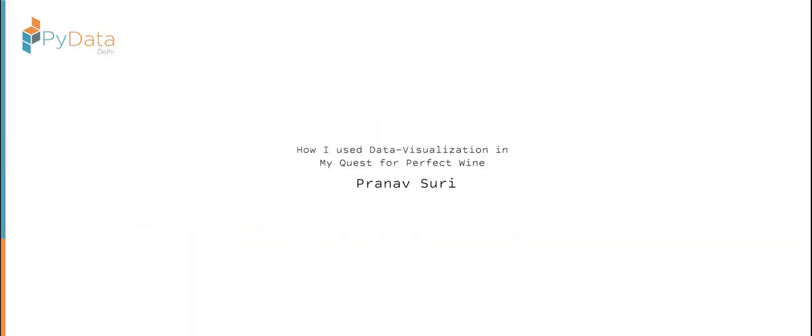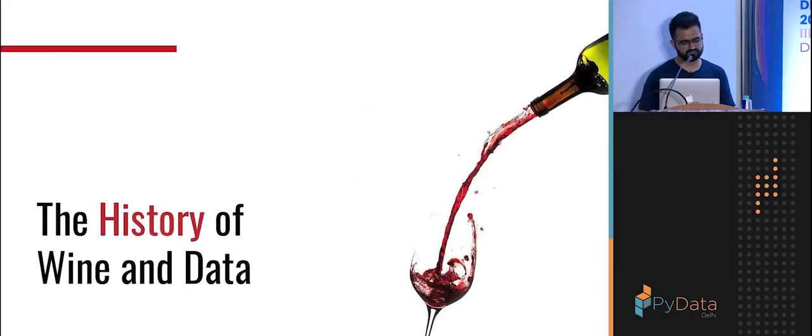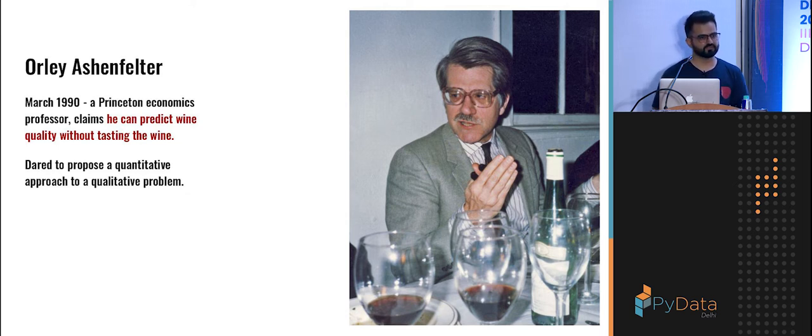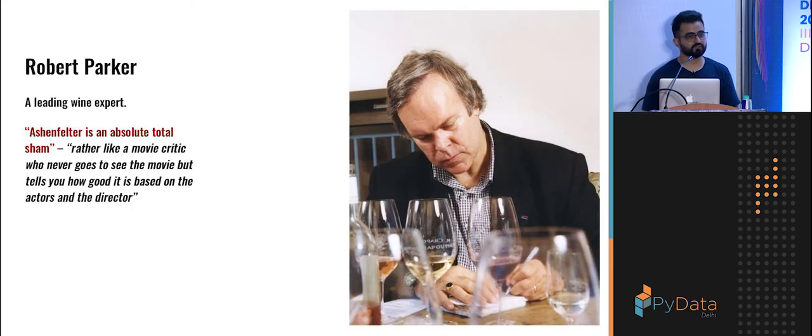When I was studying data science back in 2015, there was this story of an economist called Ollie Aschenfelter. This economist said he could predict the price of wine in an auction just by using data. And this was a very absurd idea back then. Data science wasn't a very hip thing. So of course it had to get some people mad, and that was Robert Parker, a leading wine expert back then.